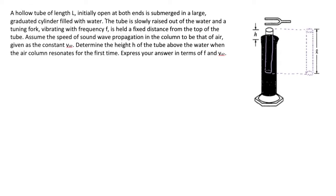A hollow tube of length L, initially open at both ends, is submerged in a large graduated cylinder filled with water. The tube is slowly raised out of the water and a tuning fork, vibrating with frequency f, is held a distance from the top of the tube. Assume the speed of sound wave propagation in the column to be that of air, given as the constant v_air, and determine the height h of the tube above the water when the air column resonates for the first time. Express your answer in terms of f and v_air.